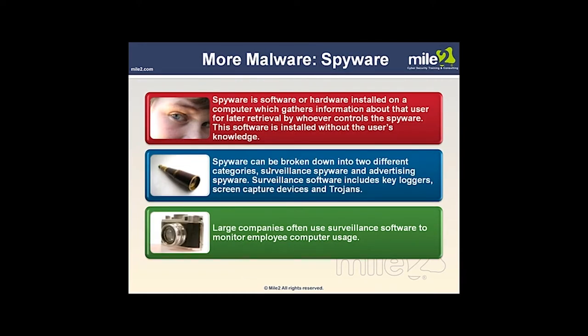In a home environment without a full-blown product, you could consider an antivirus plus an anti-malware product like Malwarebytes or Spybot Search and Destroy. You normally can only run one antivirus because they'll fight each other, but you can run an antivirus alongside a separate anti-malware product. Windows 8 comes with Windows Defender as an antivirus, and you could add Malwarebytes in a home environment. In a work environment, they most likely have you covered.